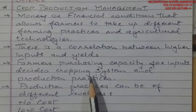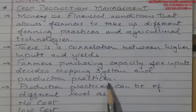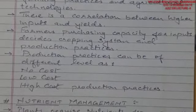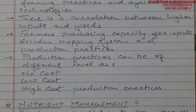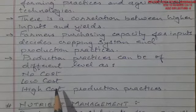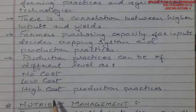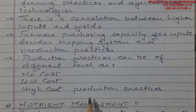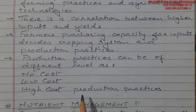Farmers' purchasing capacity for inputs decides the cropping system and production practices. Production practice can be of three different levels: no cost, which was practiced before; lower cost, as practiced by present lower or middle Indian farmers; and higher cost, practiced by larger companies or resource-rich farmers with high equipment and good financial conditions. The richer get more rich, and it is not possible for others to gain that particular output.